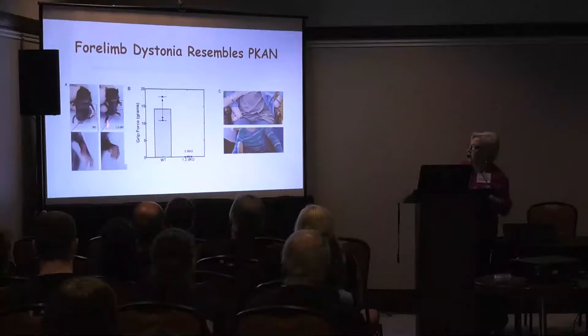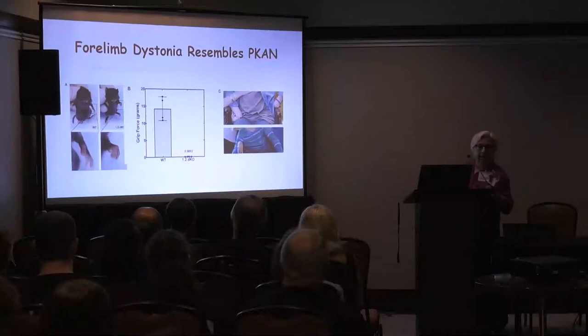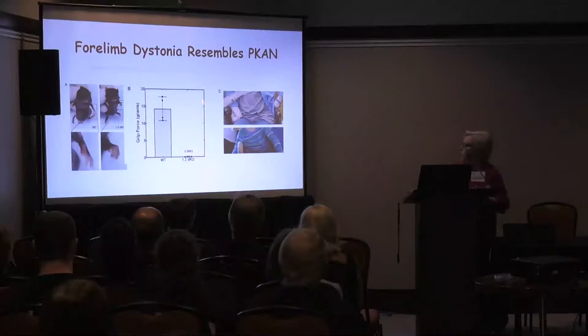The mice really don't have any grip strength remaining in their forearms, and you can measure this with a little mouse meter. This resembles a lot of what we see in PECAN patients — from a newsletter around 2015–2016 you could actually see the same type of dystonia-like deformity that develops.